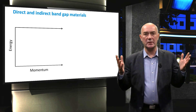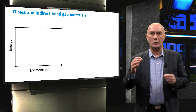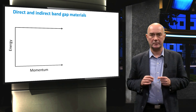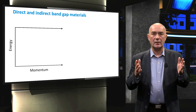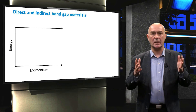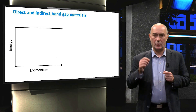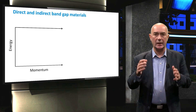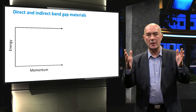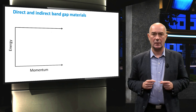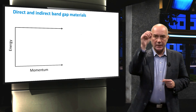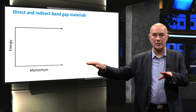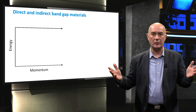Now that we are familiar with the concept of the band energy diagram, we can discuss the differences between a direct and indirect band gap. For that, we have to look at the momentum of the electrons as well as their energy states. In other words, we will look at the properties of the semiconductor material in the so-called energy-momentum space of the electrons. On the vertical axis we have the energy state in the electronic bands, and on the horizontal axis we have the momentum of the charge carrier.